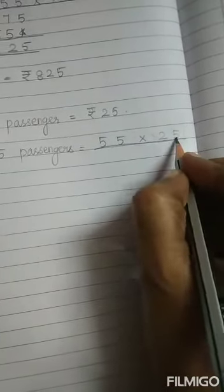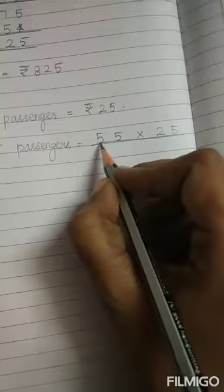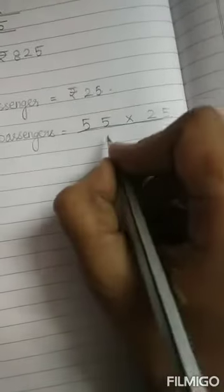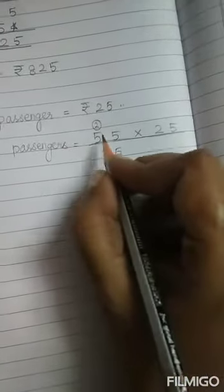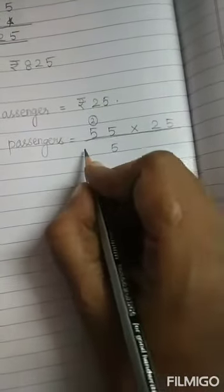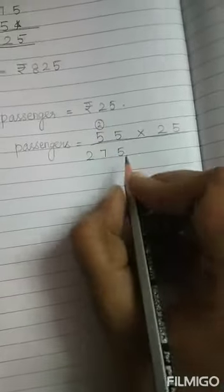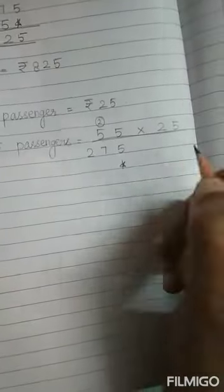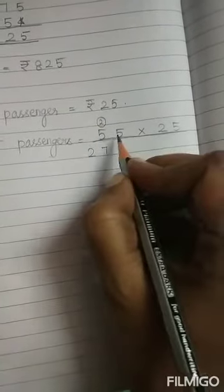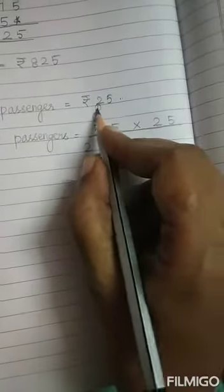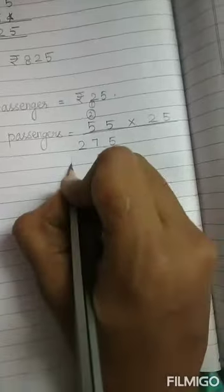First, you have to take 5 and multiply this 5 and that 5. 5 5s are 25. 5, 2 carry over. 5 5s are 25 plus 2. 27. Then, you have to take 2. 5 2s are 10. 1 carry over. 2 5s are 10 plus 1. 11.